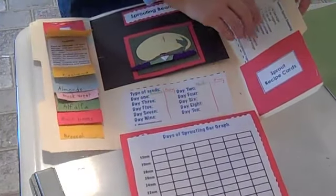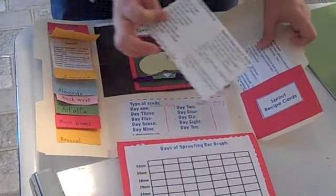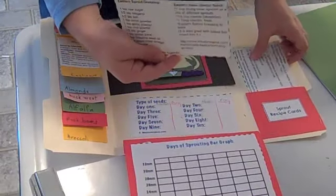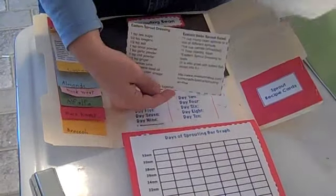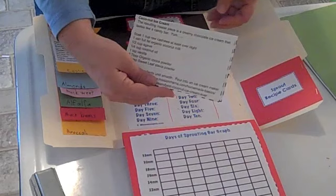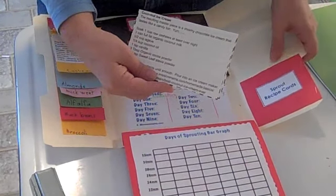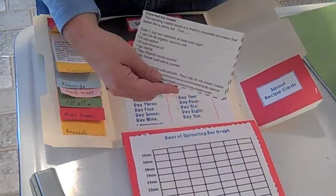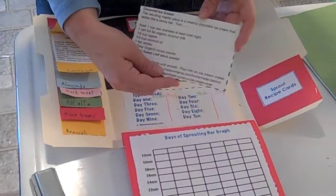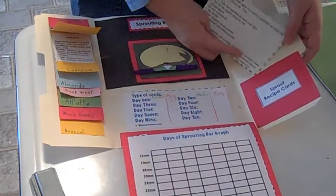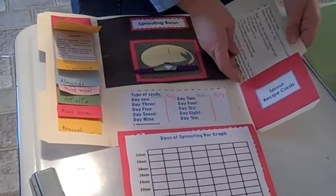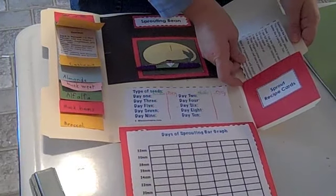And then over here there's some recipe cards, that here's a dressing that you can use with your bean sprouts and here is how to make coconut,